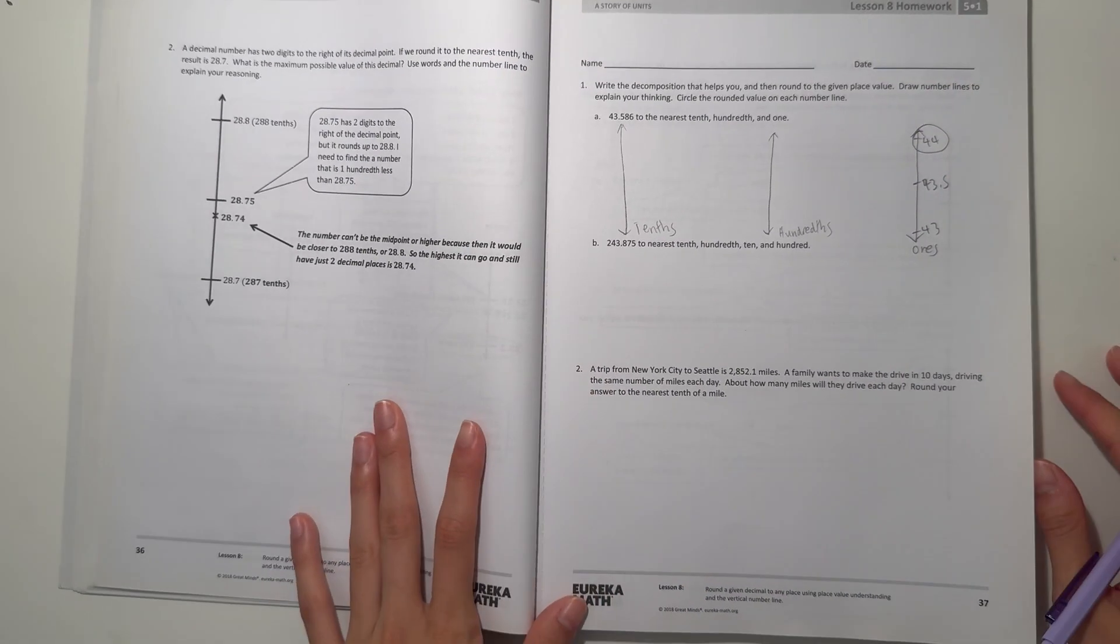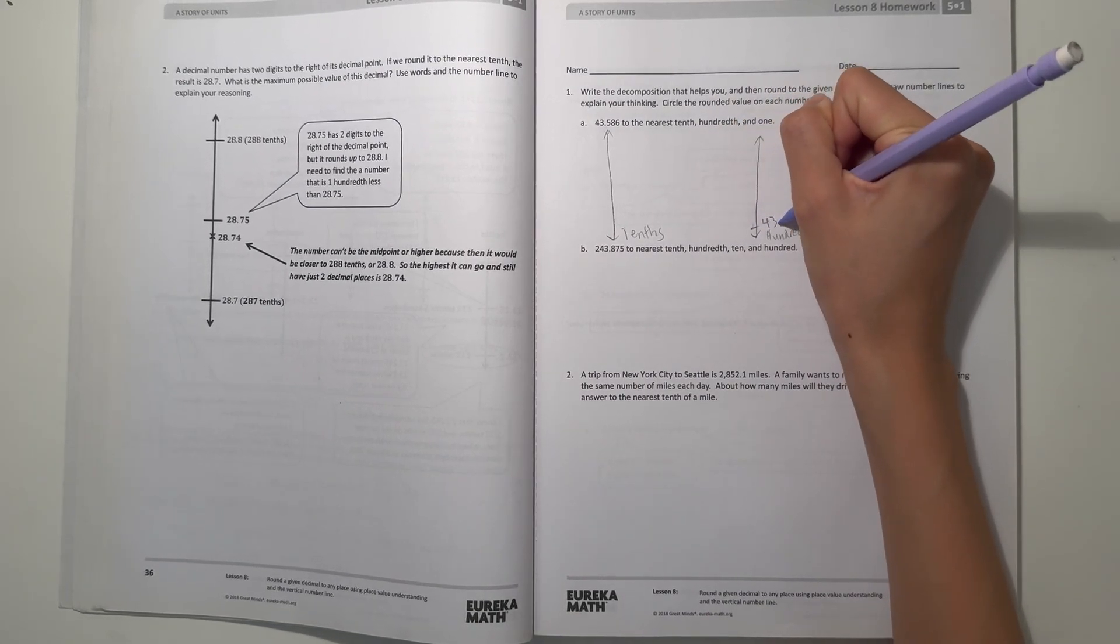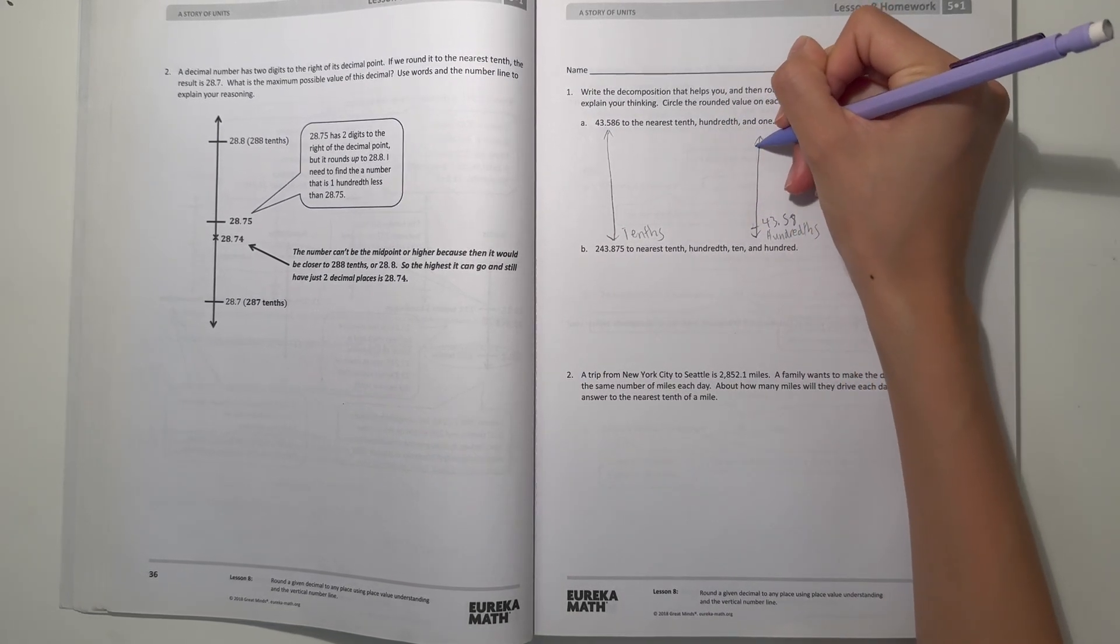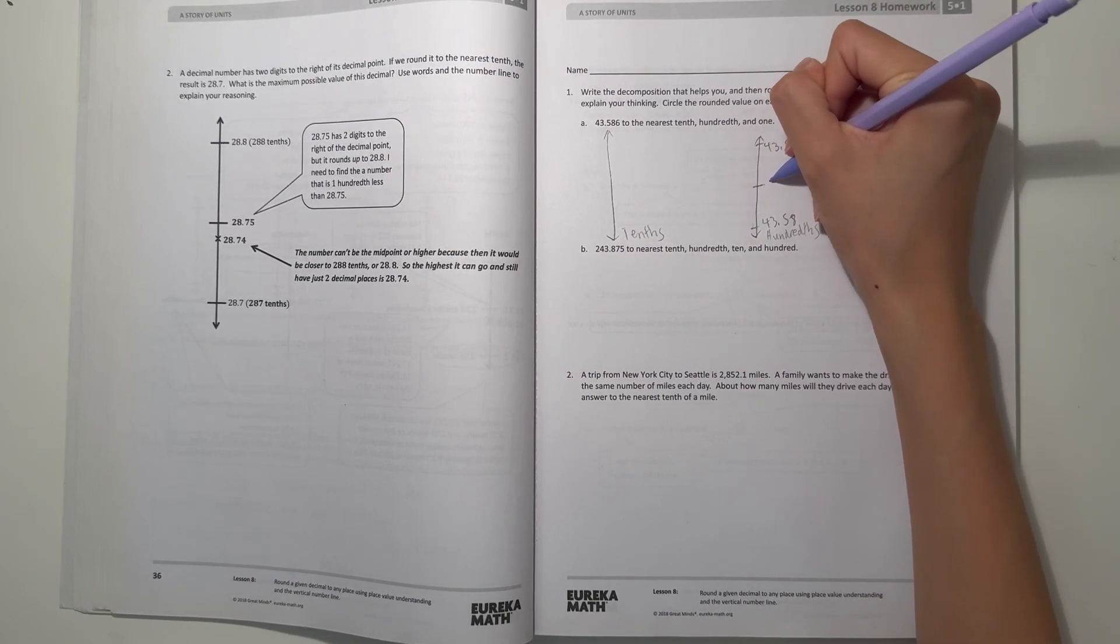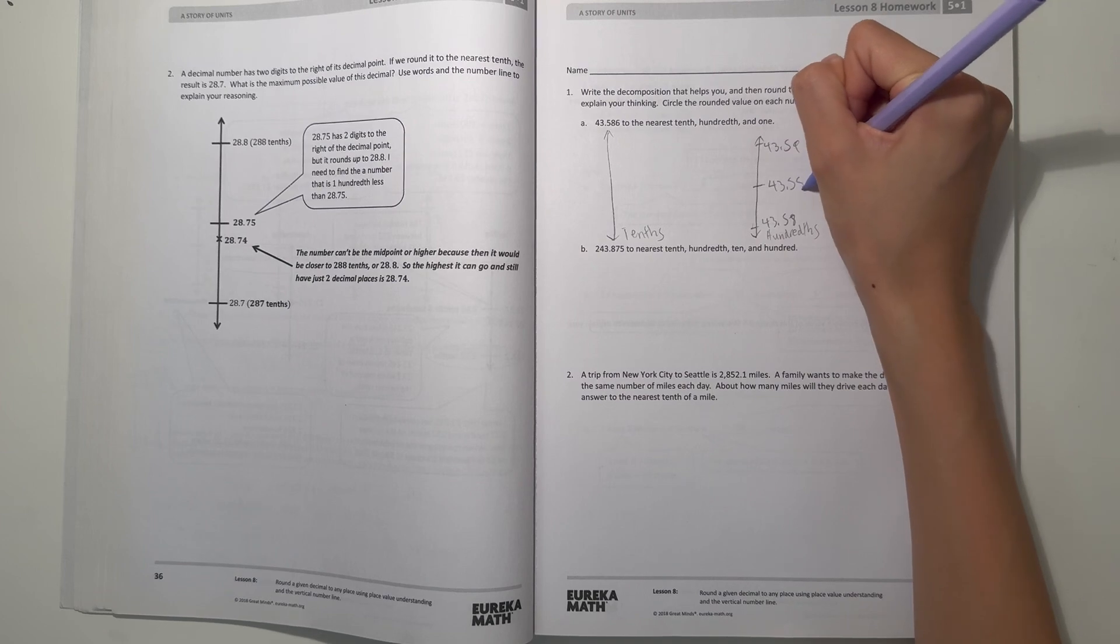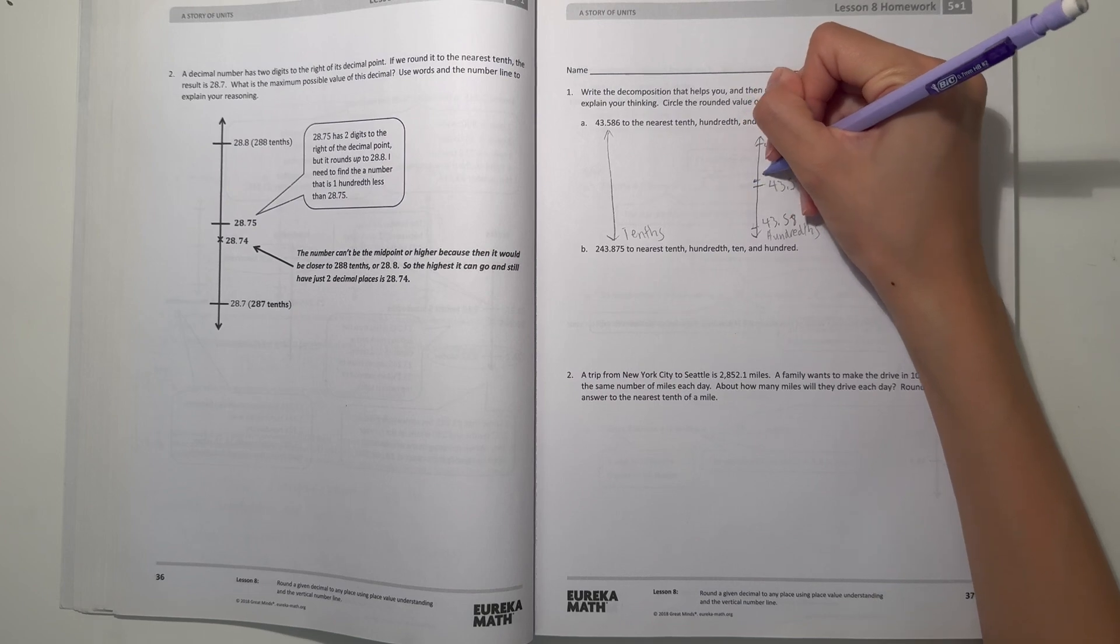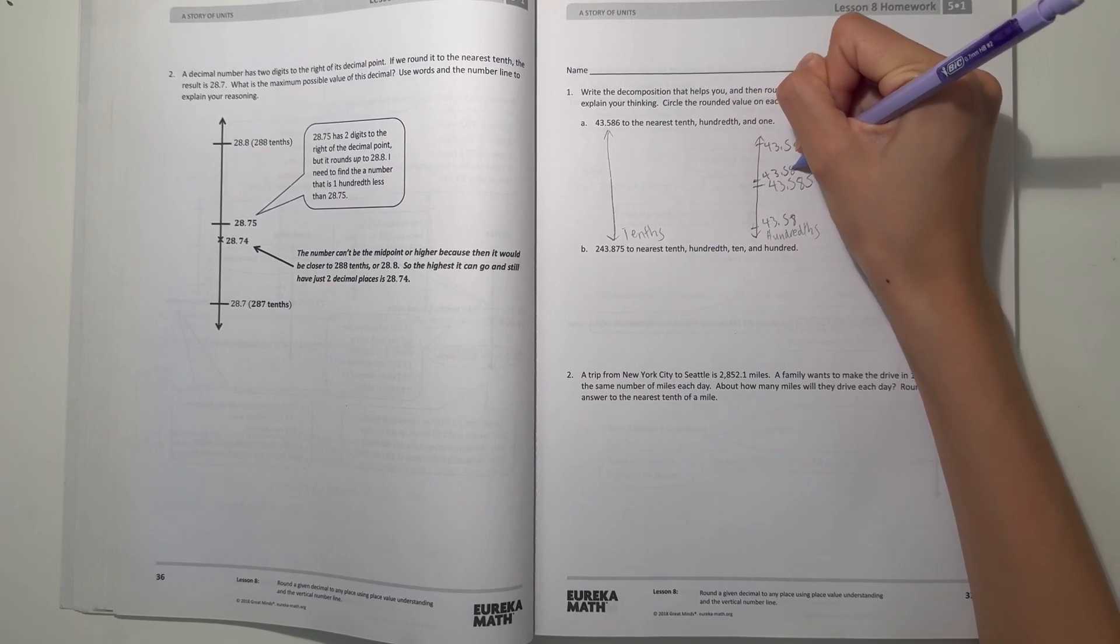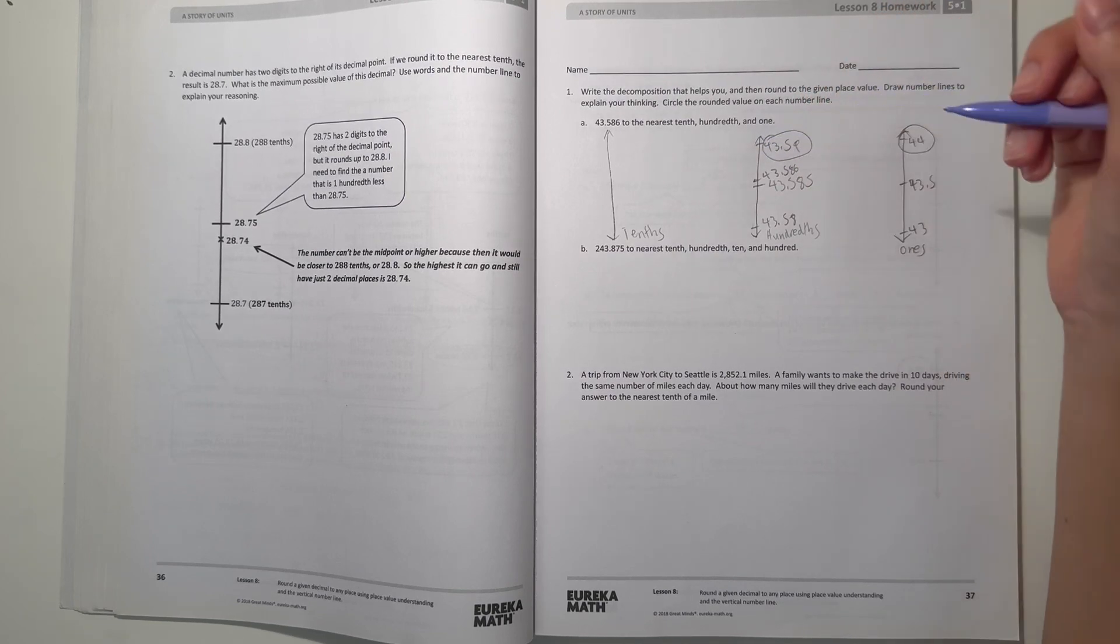And for hundredths, we have 43.58 and 43.59. So our number in between would be 43.585. And we have 43.586, so that's just slightly over. So then that means this number would round up to 43.59.